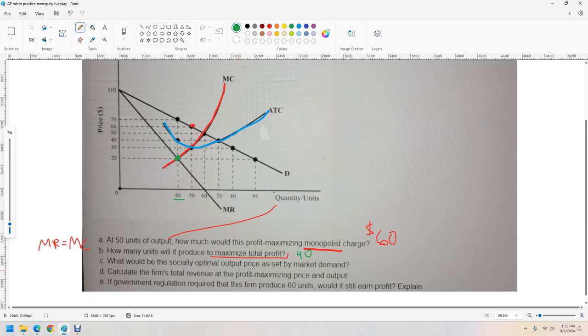What would be the socially optimal price set by market demand? The socially optimal is going to be where demand equals marginal cost. We follow that right there. That's going to be 50.